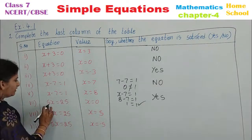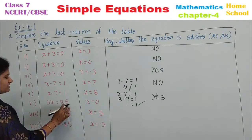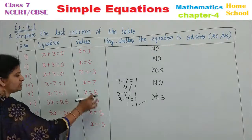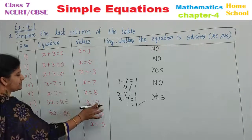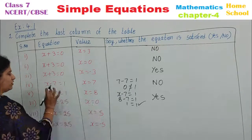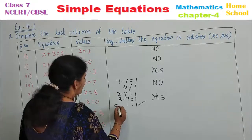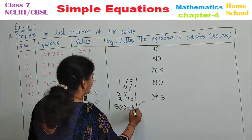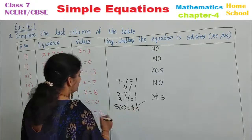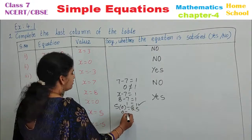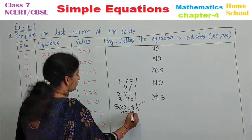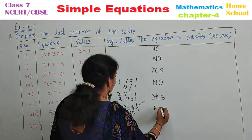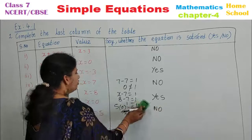Sixth problem: 5x equals 25, with x equal to 0. Substitute 0: 5 times 0 equals 0, and 0 is not equal to 25. So we say it is no.